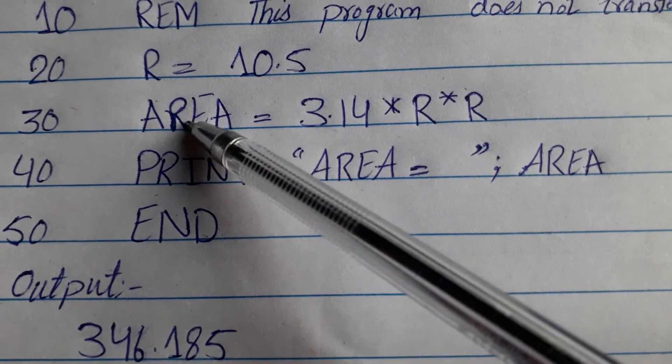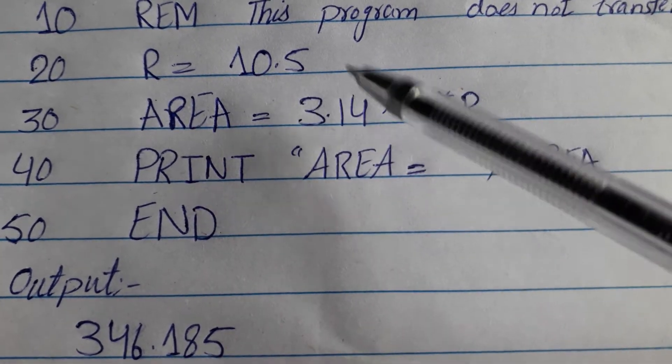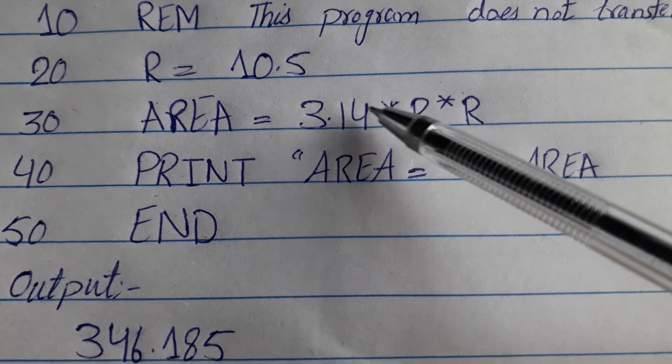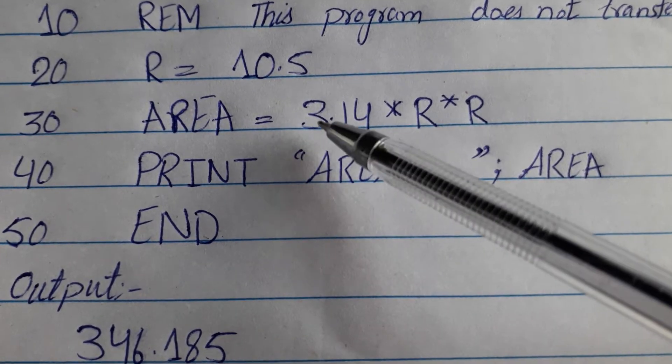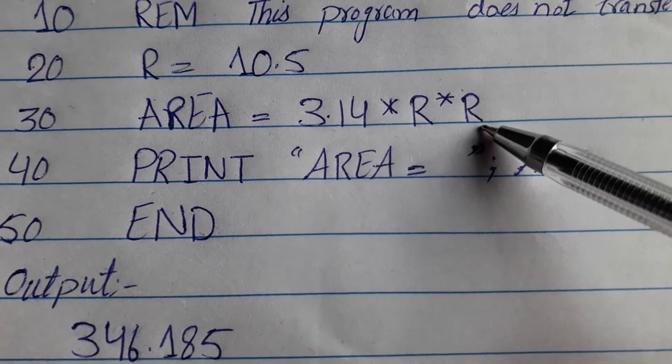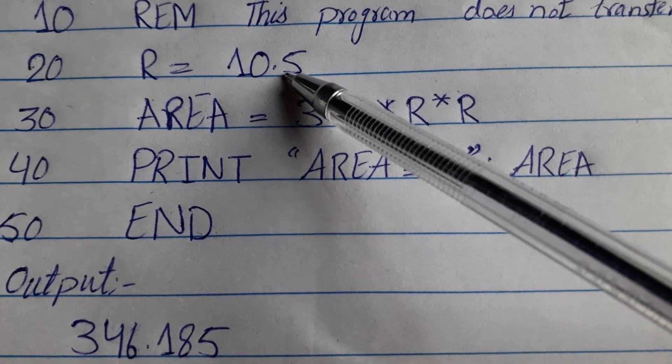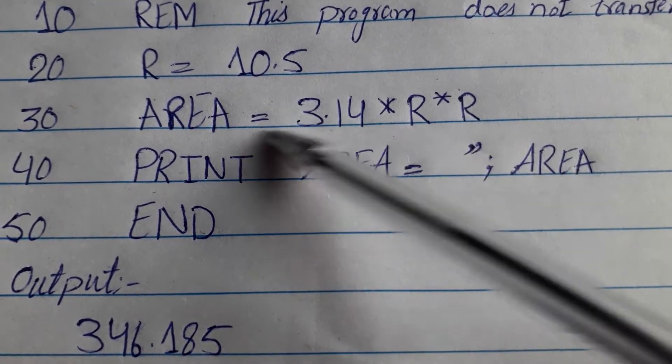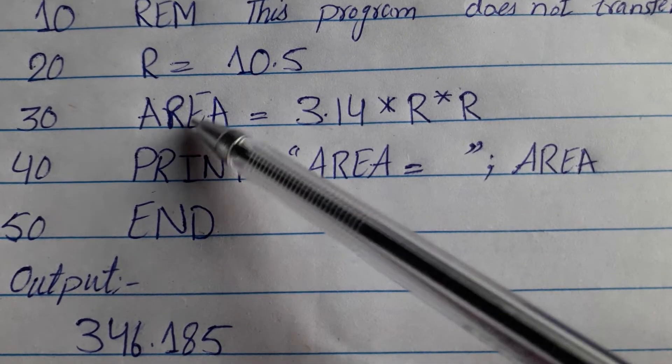This will be the value of the area. So, the value is going to store. First of all, this will be the multiplication. 3.14 multiply by r multiply by r. And r is the value of 10.5. This all says, we have to store it.